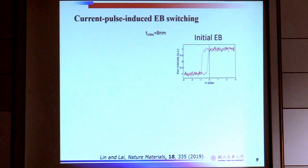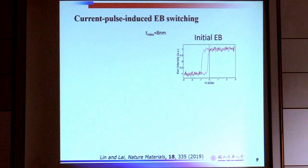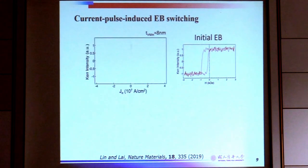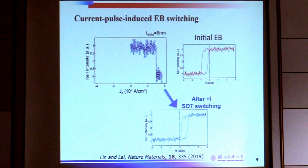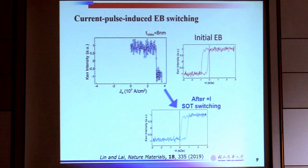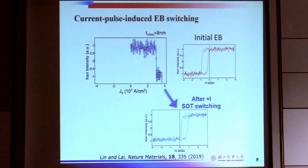Now I'll show how we use SOT to switch the exchange bias. This is the initial state. We can use field cooling or SOT switching to prepare a single shifted loop. Carrying out typical SOT switching, we see that originally the magnetization is positive. After applying a positive current, the magnetization switches to negative as expected. Clearly the exchange bias changes sign from negative to positive, which tells us that the spin current not only switches the magnetization of the ferromagnetic layers but also changes the interfacial spins in the IrMn.